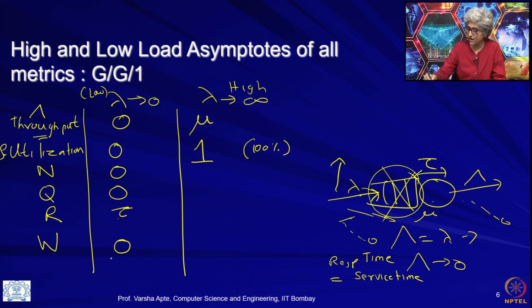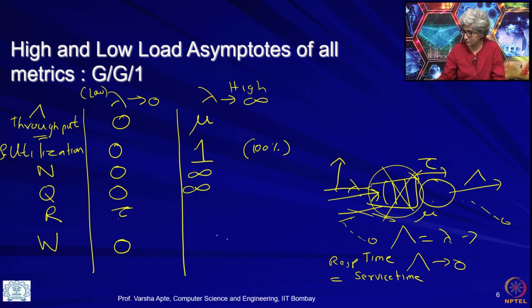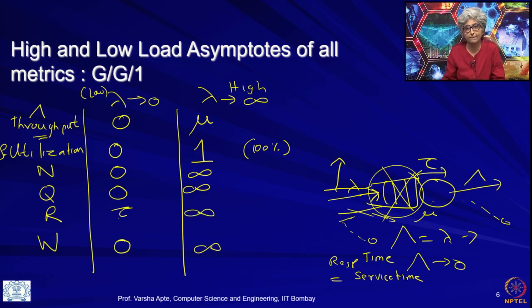What happens to all of these as lambda goes to infinity? Because it is an infinite buffer system, as lambda goes to infinity we expect the queues to go to infinity. Response time also goes to infinity because it includes waiting time, and waiting time goes to infinity as the buffer fills without bound.